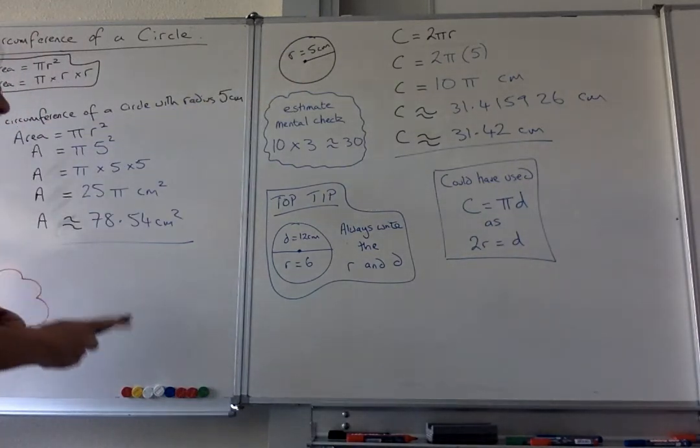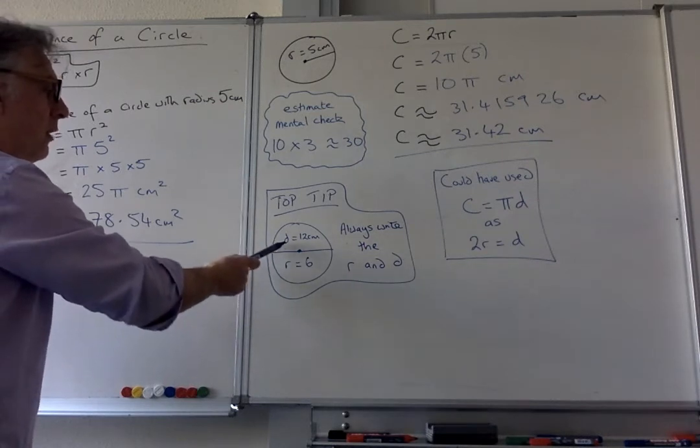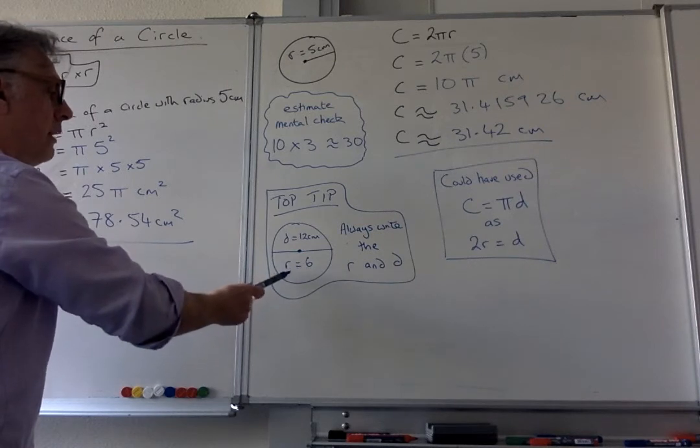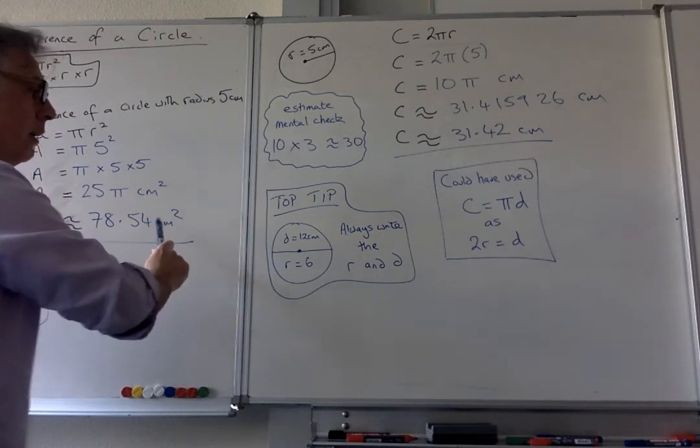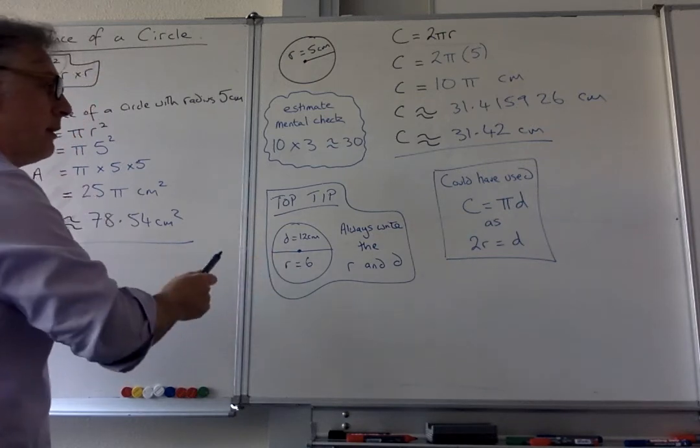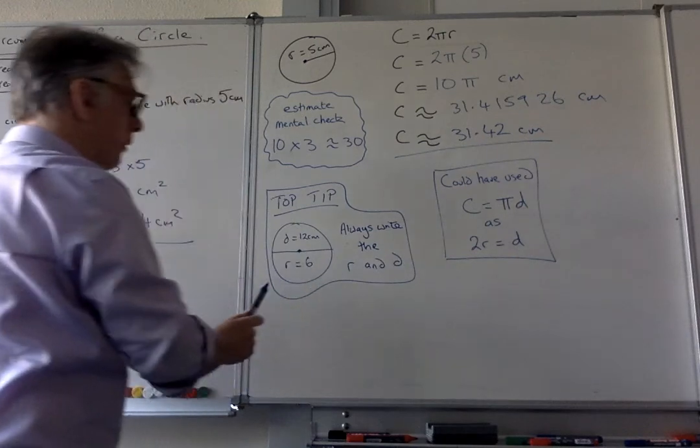A couple of top tips. People forget which one's which, so if you've got the diameter and it tells you it's 12 centimeters, I would write down the radius, because the radius you're going to use in the area formula. If they give you the radius, you can always write down the diameter because you could have used C equals π D.